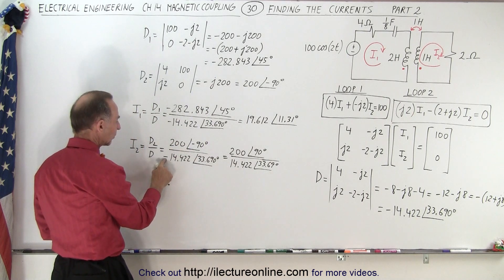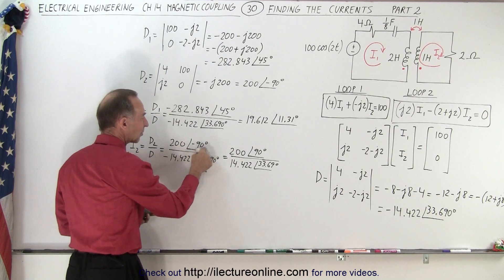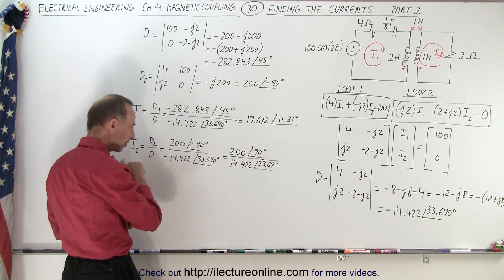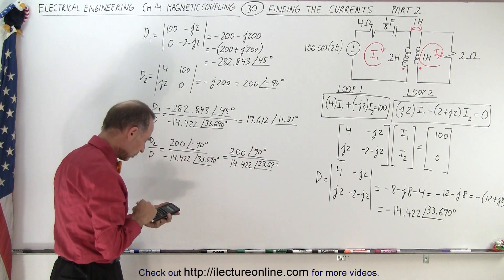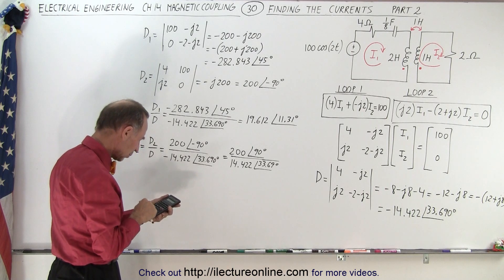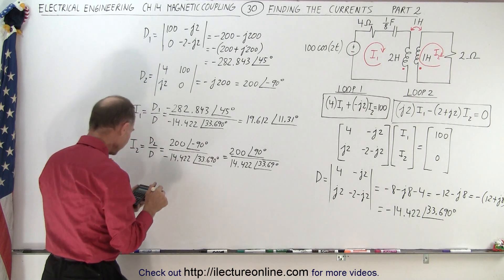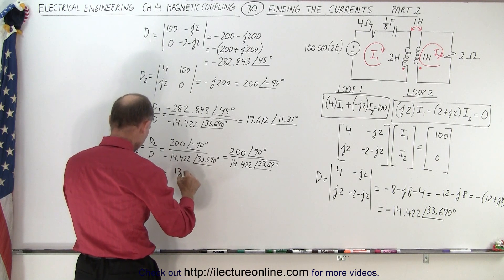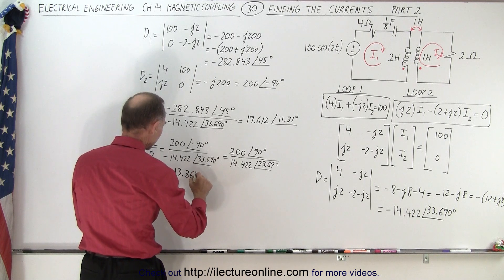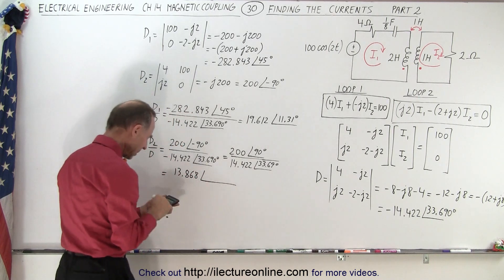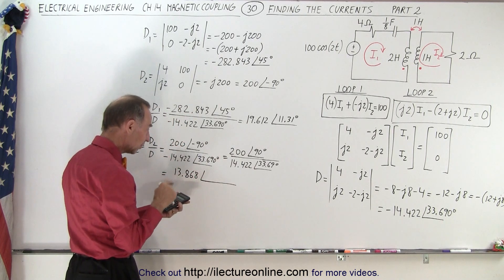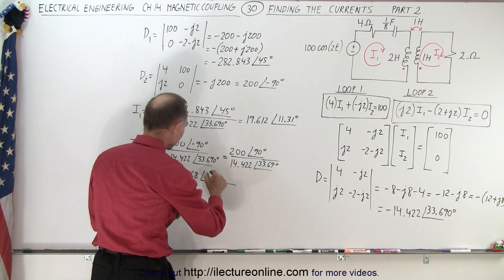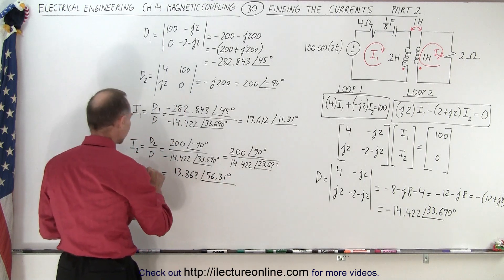So what I've done is I took the negative, brought it up here, then applied it to the minus 90, turned it into plus 90 by adding 180 degrees, get rid of the negative sign, and now I'm ready to take 200 divided by 14.422, which gives me a current of 13.868 with a phase angle of 90 minus 33.69. That gives me 56.31 degrees, and that's I2.